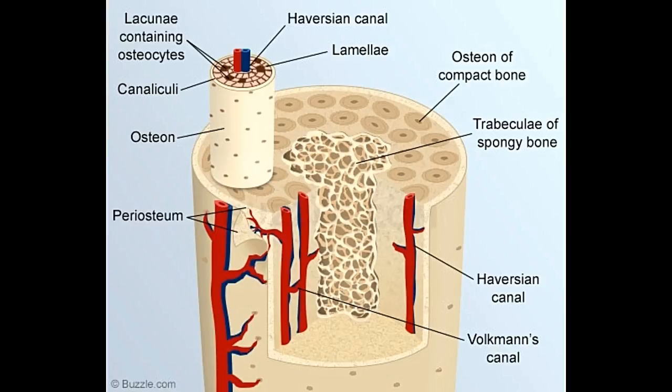On the other hand, spongy bones are less dense. They consist of trabeculae or bar-shaped bones that are arranged along the lines of stress. These provide strength to the ends of the weight-bearing bones. The spaces between them contain red bone marrow. In case of flat bones, spongy/cancellous bone lies between two layers of compact bone. The structure of these bones is such that they provide protection.